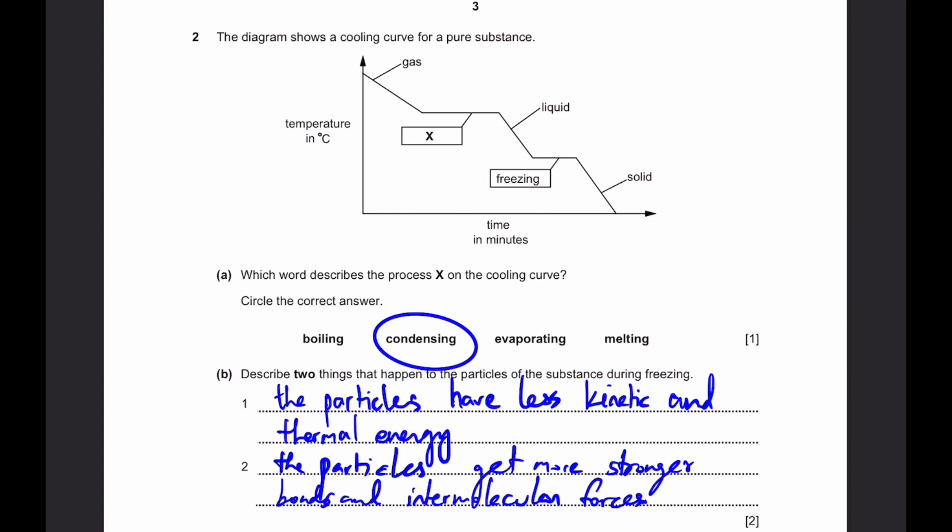Describe two things that happen to the particles of the substance during freezing. Number 1. The particles have less kinetic and thermal energy when they're freezing because they lose temperature. Two. The particles get more stronger bonds and intermolecular forces. This is important because only then they'll be able to only vibrate about their fixed conditions as a solid rather than be able to take the shape of the container like a liquid.